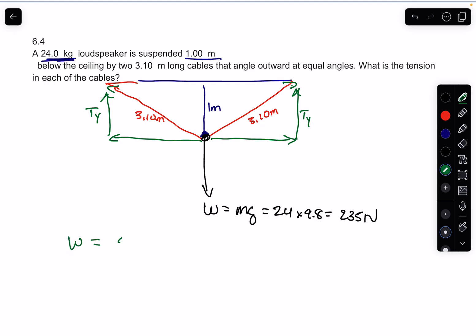But what is Ty? Ty would be equal to T sine, because it's opposite - this is the opposite angle of the theta.